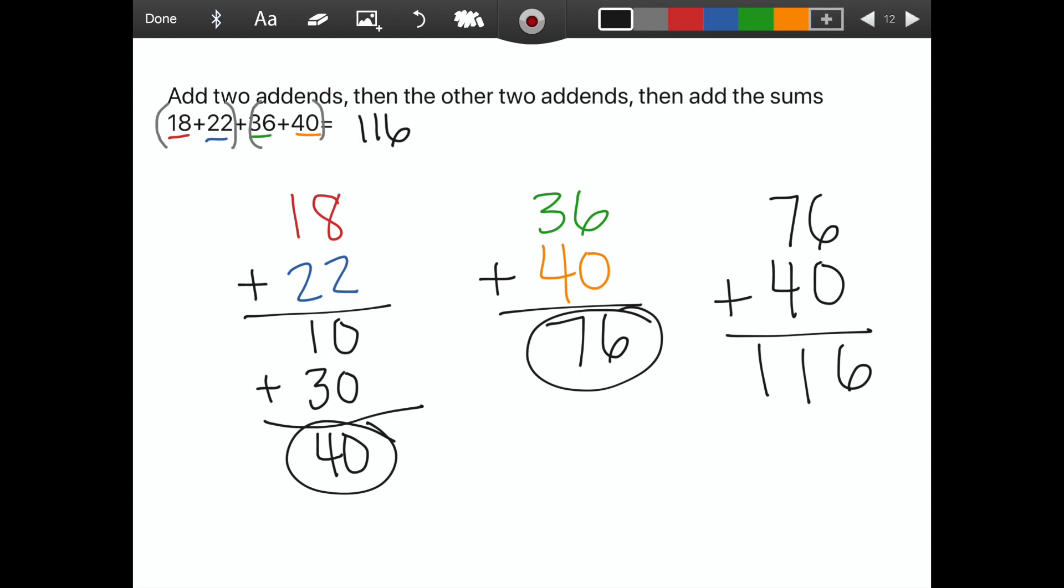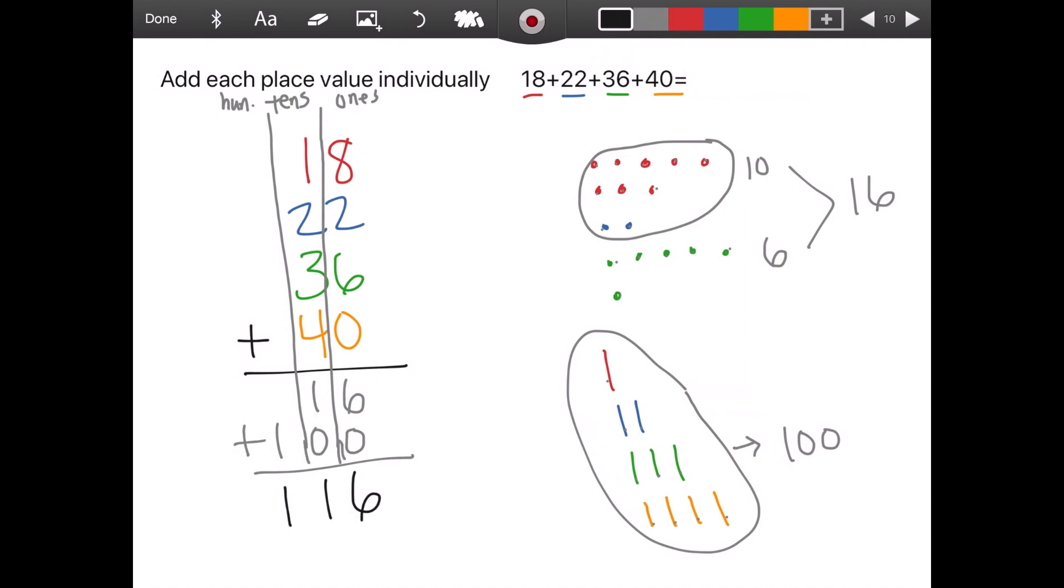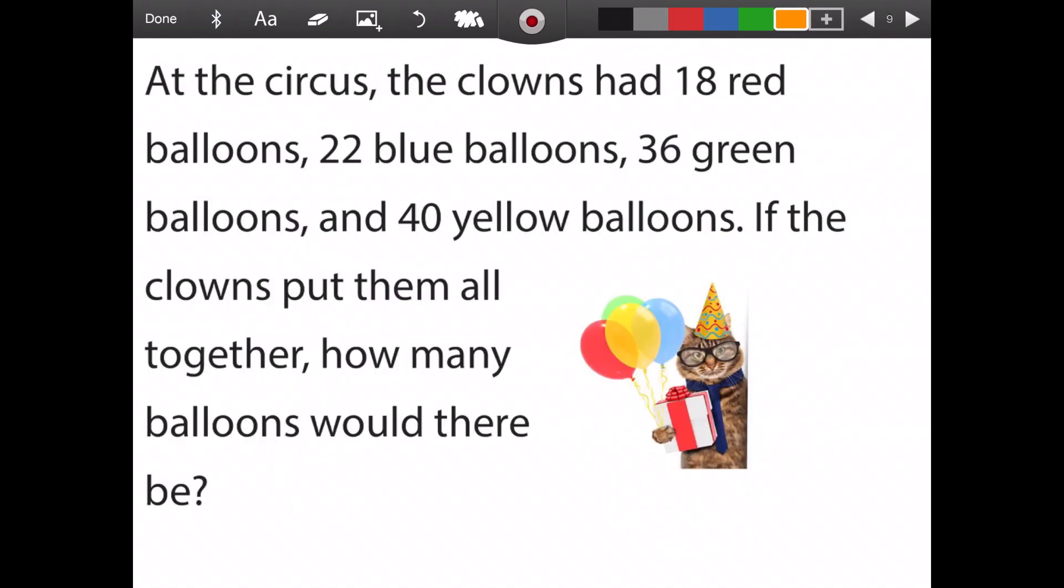And rather than having it get too messy, it's good to just chunk it and do a couple at a time, using the associative property. So we know how to add two addends, then the other two, then add it all together. We successively added each addend in order. And we also added each place value individually. To answer our question of if the clowns put them all together, how many balloons would there be? And we now know that there would be 116 balloons. Now it is your turn to continue on with your lesson and practice some problems on your own.